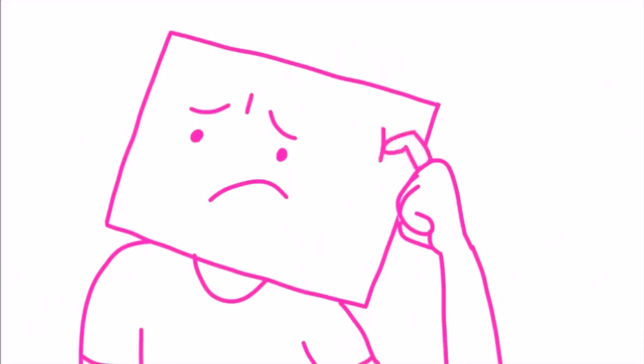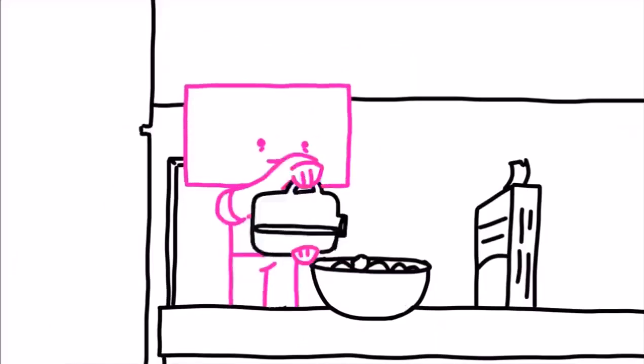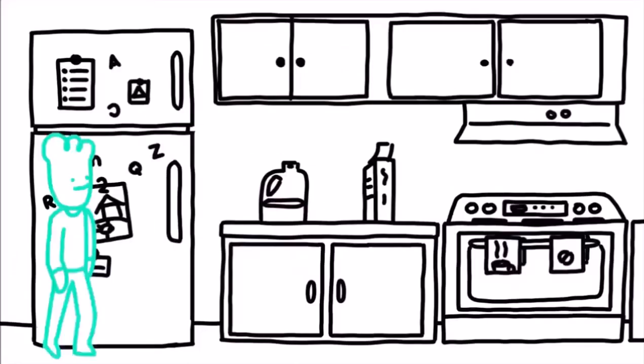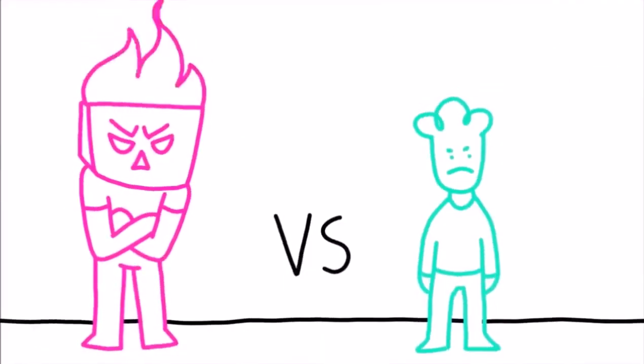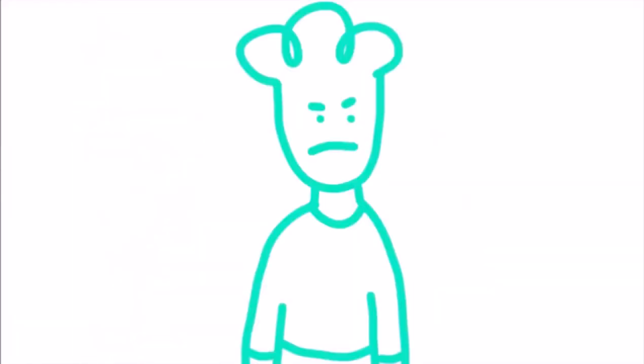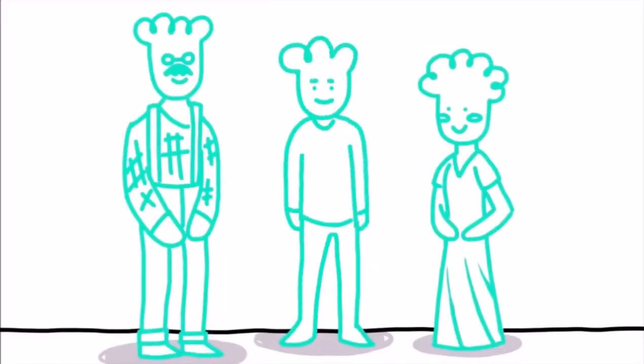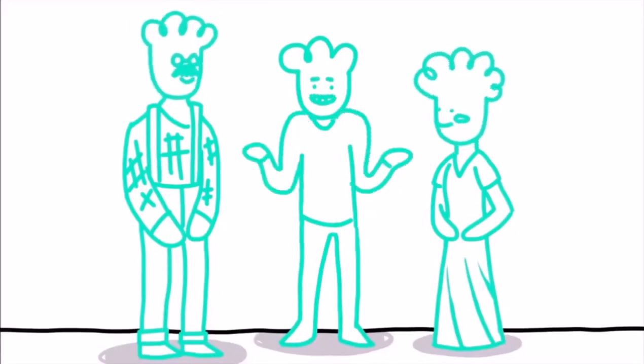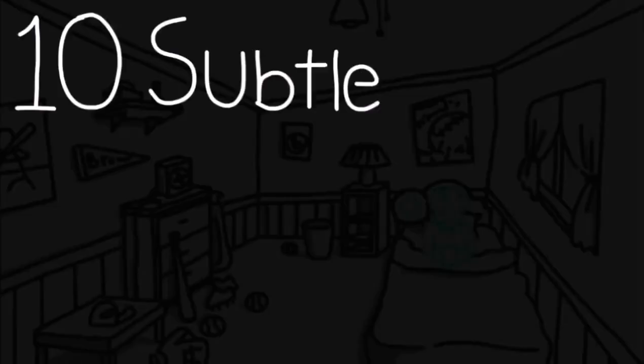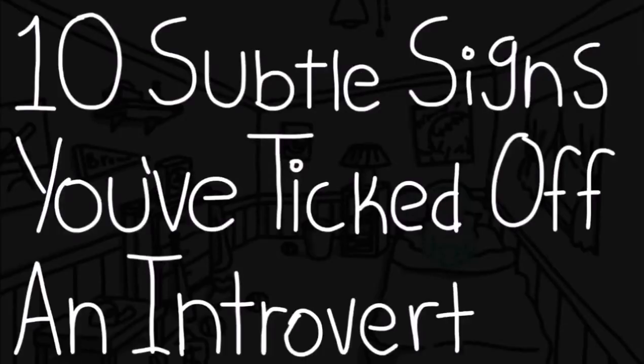Why should this even matter to you? Because if you tick off an introvert, you've made an enemy for life. Although not as verbal or out there about their anger as extroverts, introverts usually are more dangerous because they don't wear their hearts on their sleeves. If you're an introvert, you'll recognize some of these signs. If you're family or friends of an introvert, you'll remember these signs from past incidences. Here are 10 subtle signs that you've ticked off an introvert.